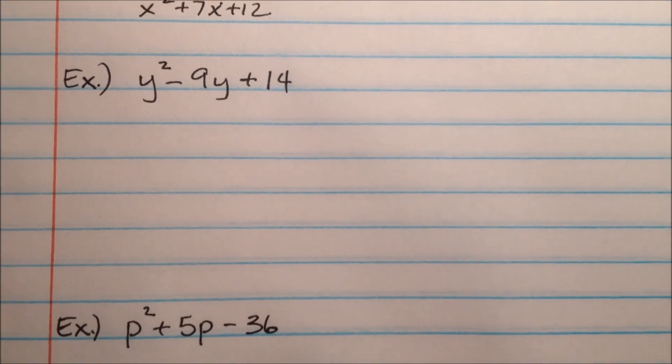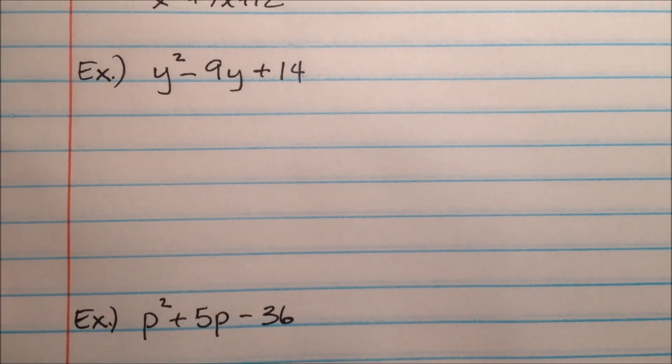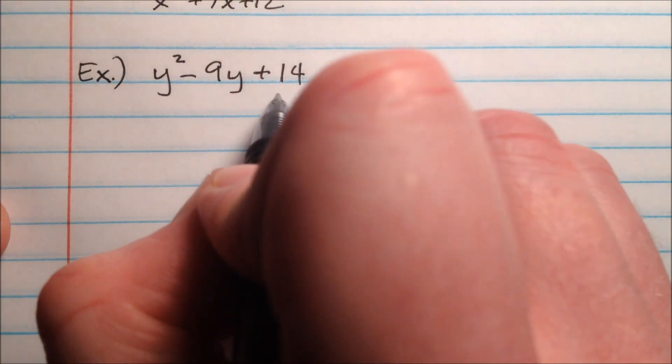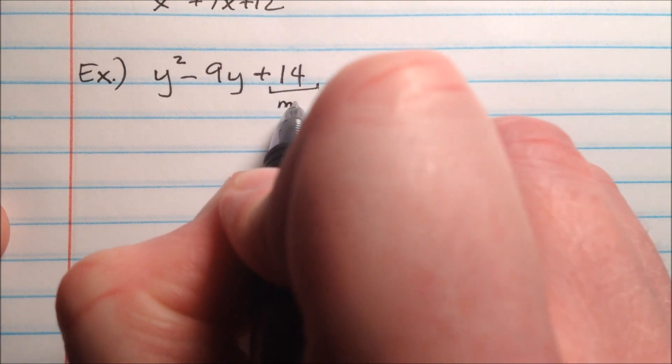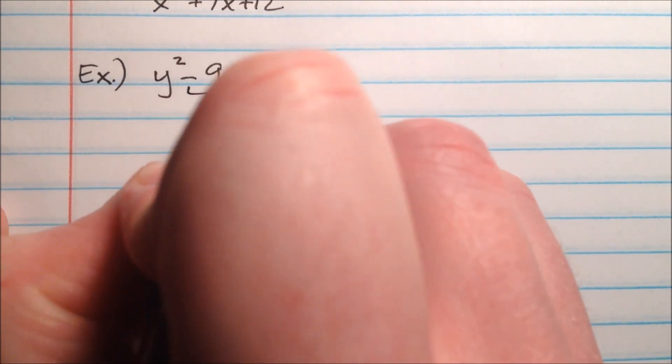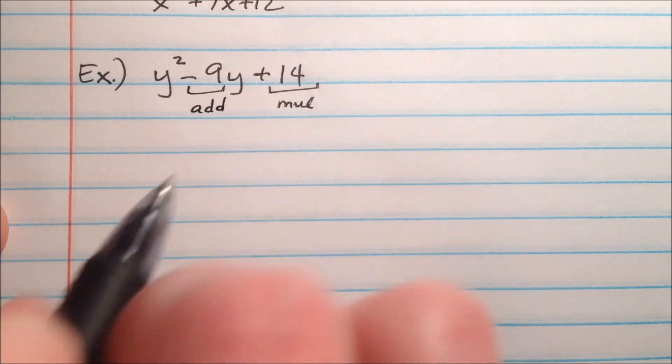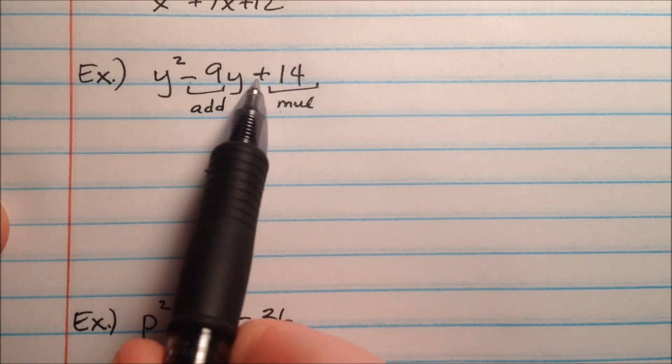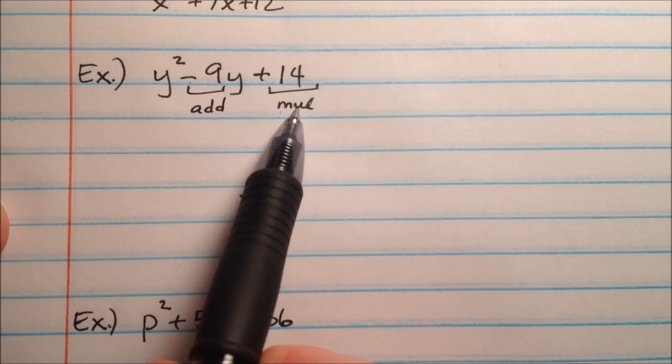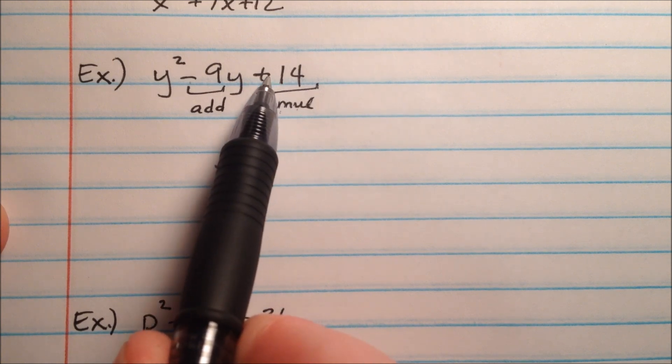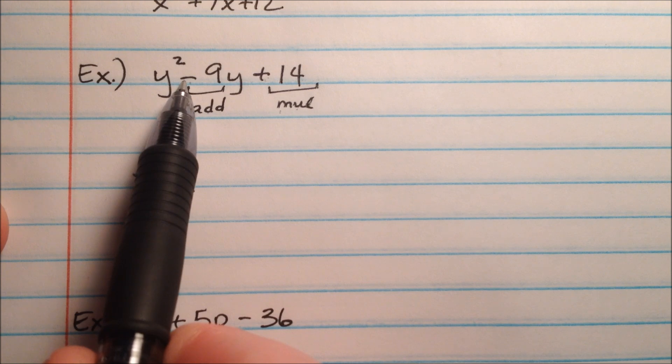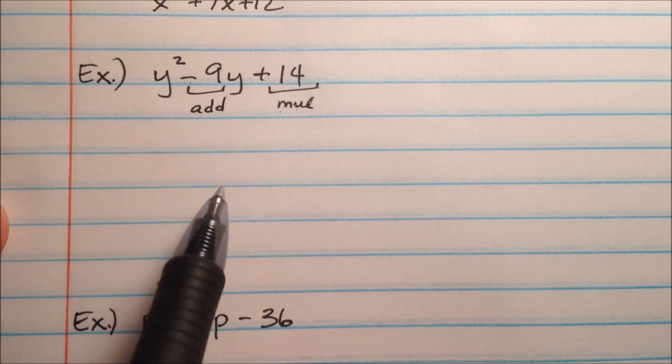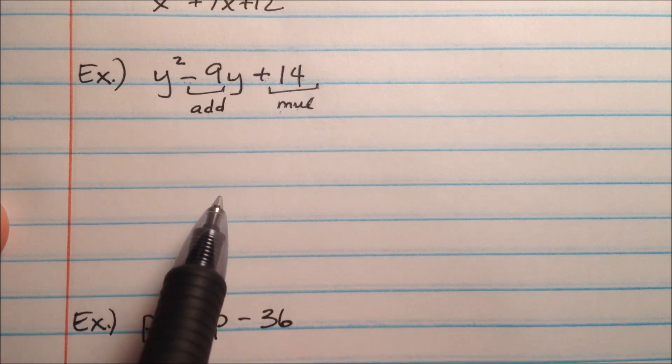Our second example is going to be y squared minus 9y plus 14. And again, we're going to be looking for factors of 14 that add up to negative 9. In the last example, we saw that both of these signs were positive, so when we multiplied the values, we got a positive number, and when we added them, we got a positive number. Which told us that both our 3 and our 4 were both positive.